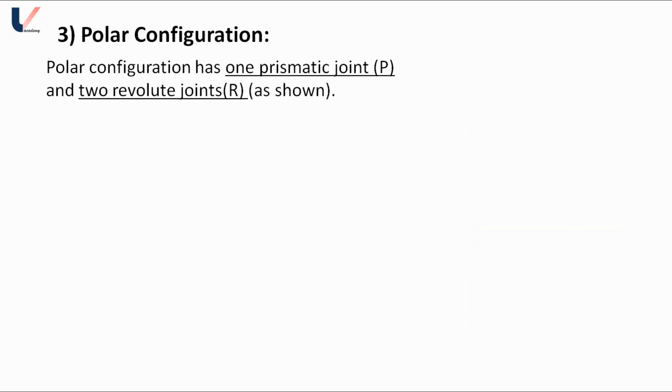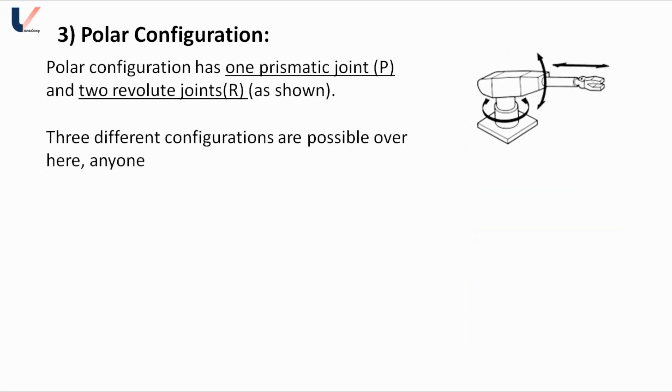In this configuration, two joints are revolute and one joint is prismatic, as shown in the figure. Any one of these three joints can be a prismatic joint, so the possible configurations are RRP (revolute, revolute, prismatic), RPR, and PRR.